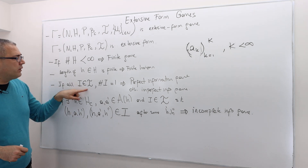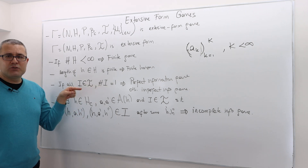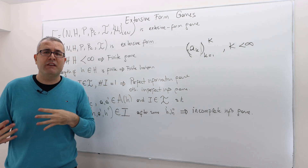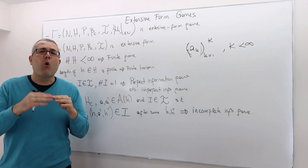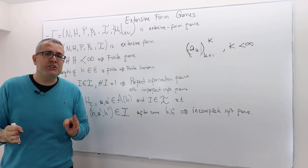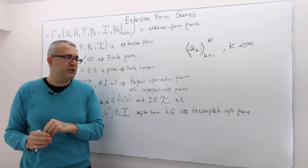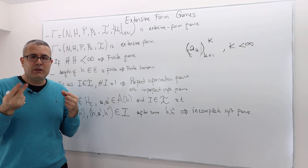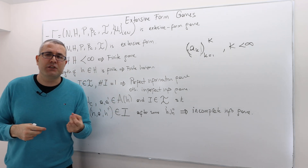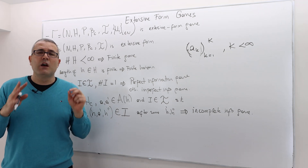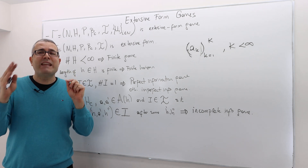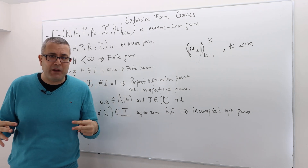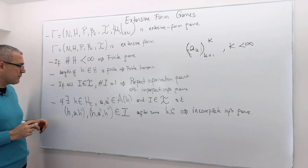If all the information sets are singleton — meaning there is only one history in each information set — then we call this a perfect information game, meaning every player can observe all the previous actions before him. Otherwise, if there is at least one information set having more than one history, we call it an imperfect information game. In an imperfect information game, a player may not distinguish what happened previously.